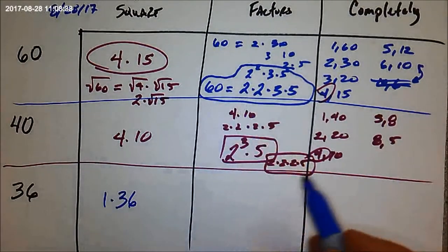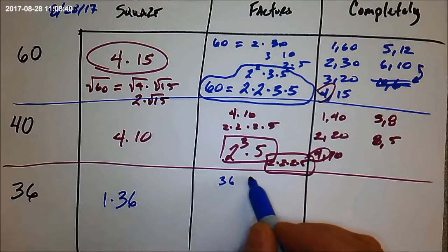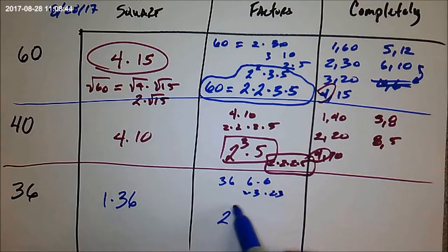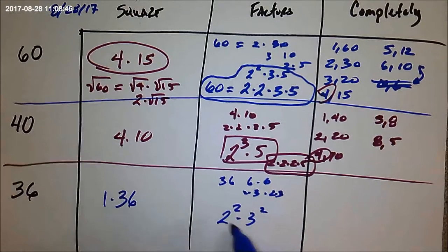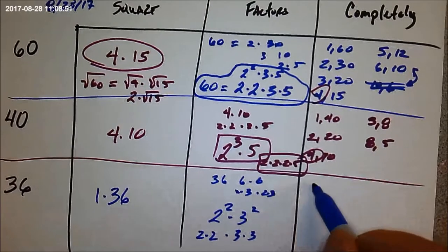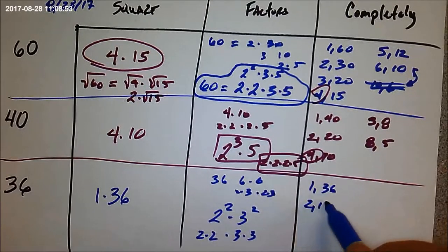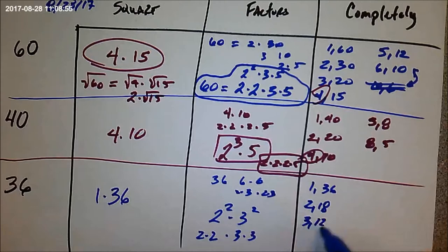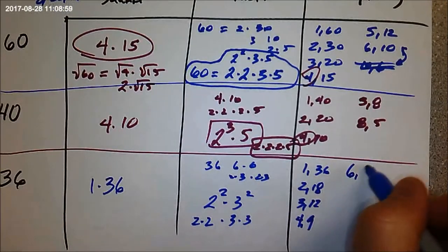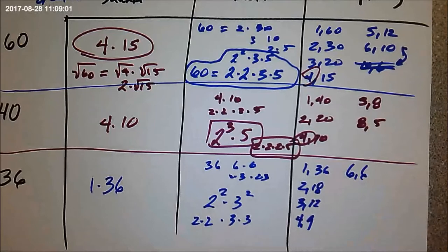All right, so the prime factors, though, since 36 is 6 times 6, and each 6 is 2 times 3, that's 2 squared times 3 squared. You read it out. 2 times 2 times 3 times 3. That would be okay. And factoring completely, 1 and 36, 2 and 18, 3 and 12, 4 and 9. 5 doesn't go in, but 6 does 6 times, and that's how I know I'm done because it's switched around, you see?